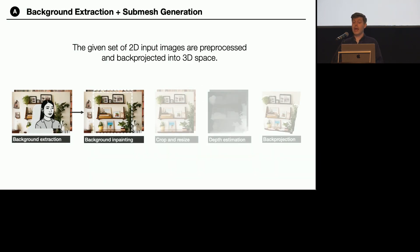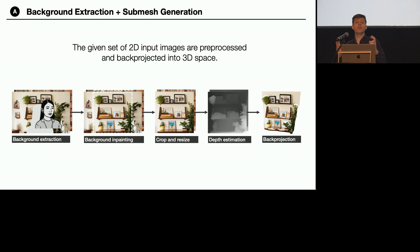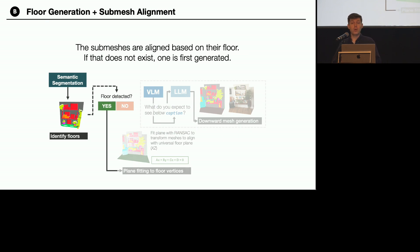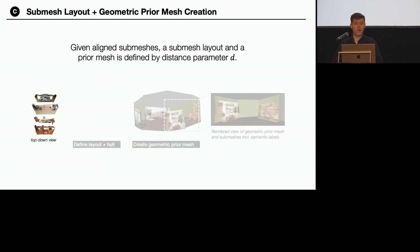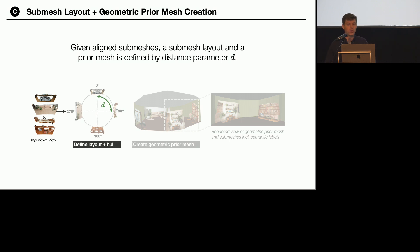These considerations led to the SpaceBlender pipeline, which consists of two stages. The first runs once per generation, and the second involves an iterative process. The first stage starts with an image preprocessing step to remove any humans detected by a semantic segmentation model, after which depth estimation and back projection are used to create 3D models from input images, which we call submeshes. The submeshes are aligned to a common floor plane through a RANSAC-based method, which fits a plane to vertices matching projected semantic floor labels. If no floor is available in an input image, we generate a floor through a downward mesh generation trajectory, using a prompt defined by a large language model passed an inferred image caption of the input image — essentially asking what is below this input image, for instance a wood floor or the rest of a couch. After alignment, submeshes are arranged with a parameter-based layout technique that positions them on the perimeter of a circle. The diameter of the circle is determined through parameter D, determining the size of the blended space between each of the submeshes. The geometric prior is then defined as the convex hull of this layout, and this prior will guide the generation.